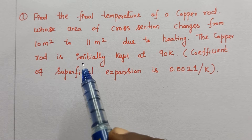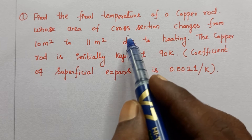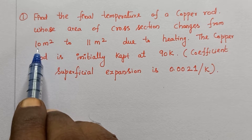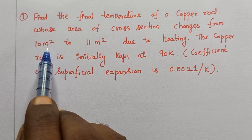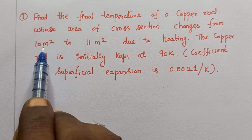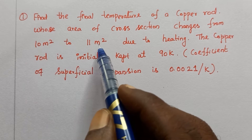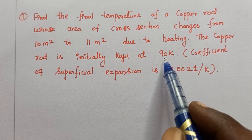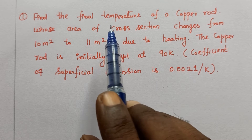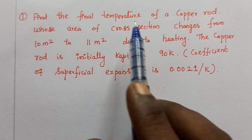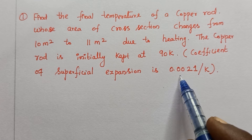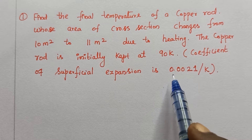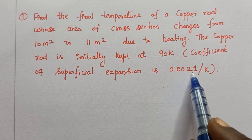Let's first look at the data. The initial area of cross section is 10m². The copper rod is heated and the area becomes 11m². The initial temperature is 90 Kelvin. The coefficient of superficial expansion is given, which is 0.0021 per Kelvin.